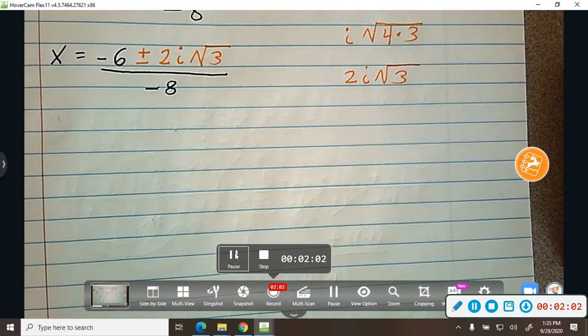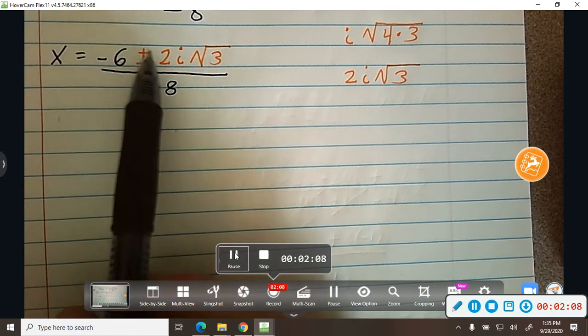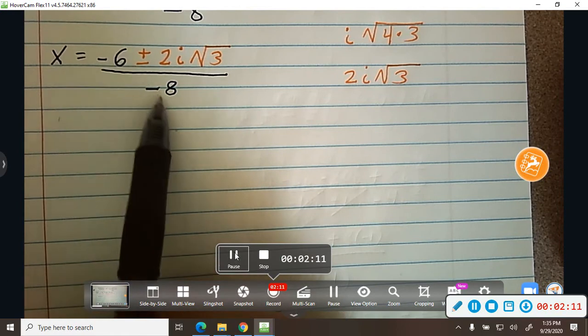Now from there, we don't usually like negatives in the denominator. So what I could do is divide everything by a negative. So I'd get 6 and 8.